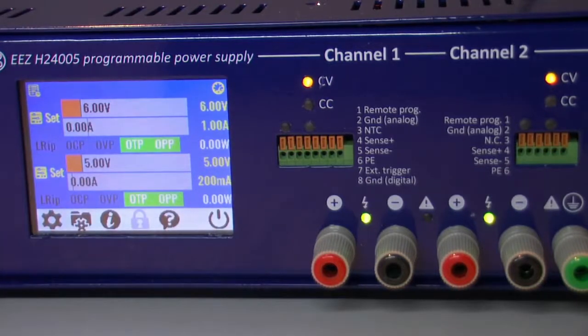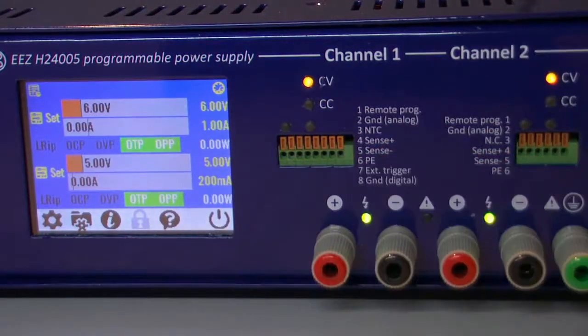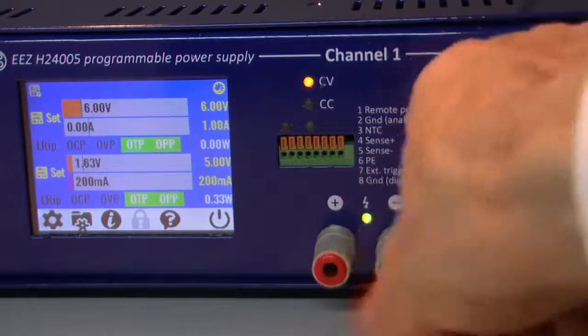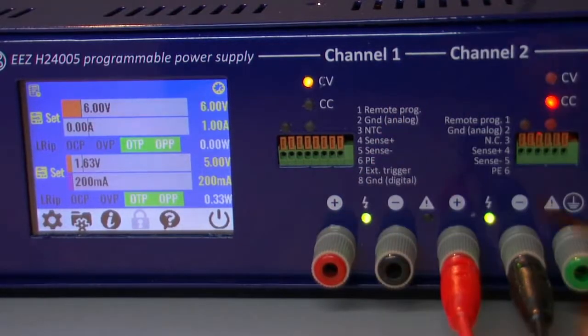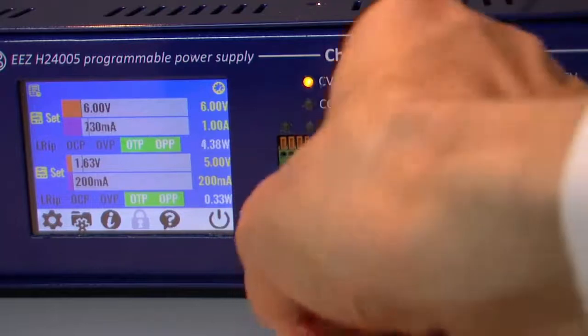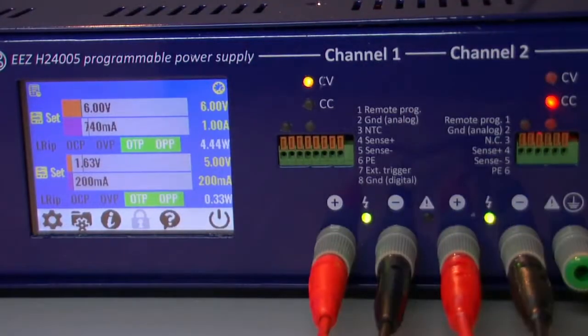Because I know that previously set 10V is too high or 1A was too high for my connected load. And now I can put the load and I'm satisfied with the result.